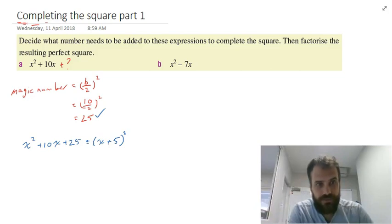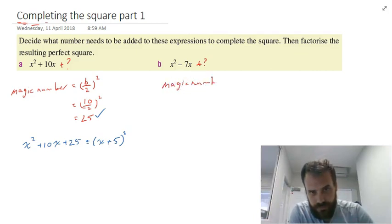This one's x squared minus 7x and plus some question mark. We need to find the question mark we need to add to it. So it's going to be magic number equals the b value over 2 squared. Now that's going to be equal to negative 7 over 2 squared.